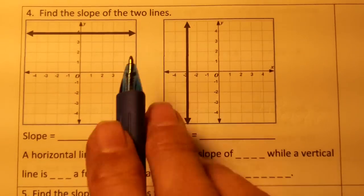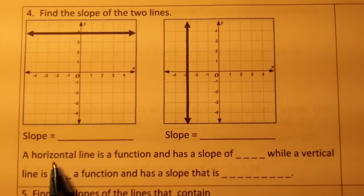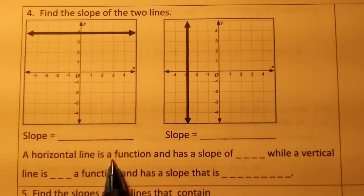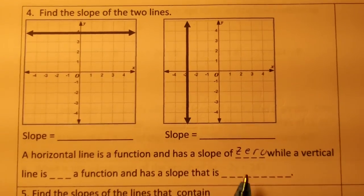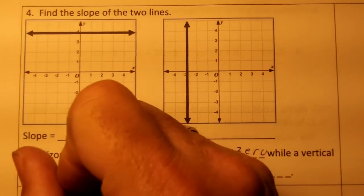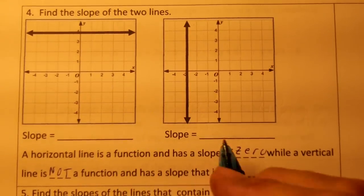Problem number four: find the slope of the two lines. Okay, let's fill in the blanks here. A horizontal line is a function that has a slope of zero, while a vertical line is not a function and it has a slope that is undefined.